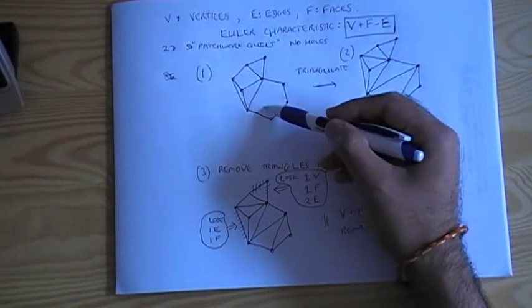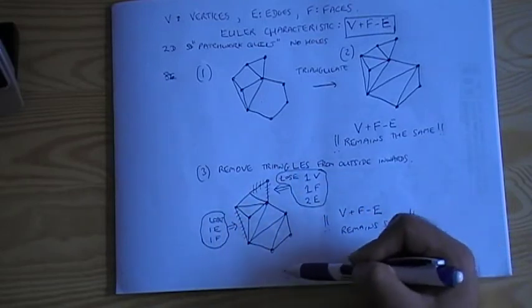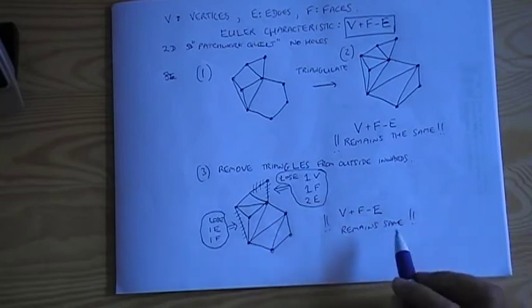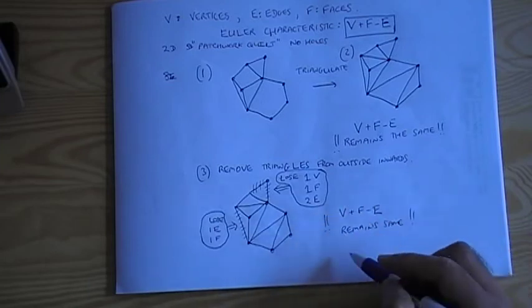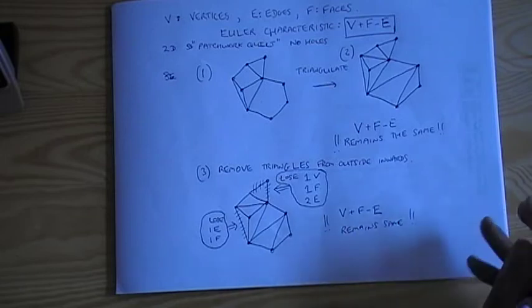So we've started out with our patchwork quilt. We've triangulated it, and then we're slowly going to remove the triangles from the perimeter of the shape. And by doing this, we end up with a new shape, which is smaller, but has exactly the same value for the Euler characteristic.